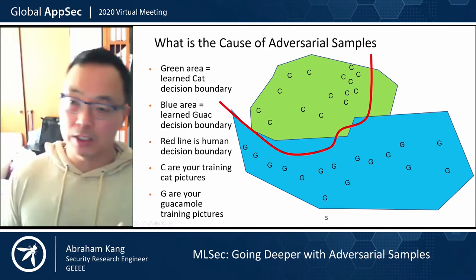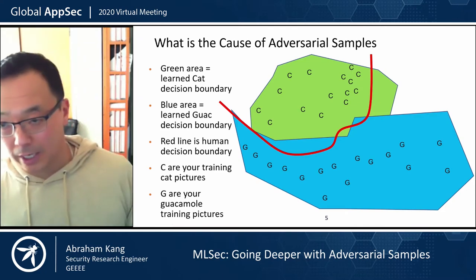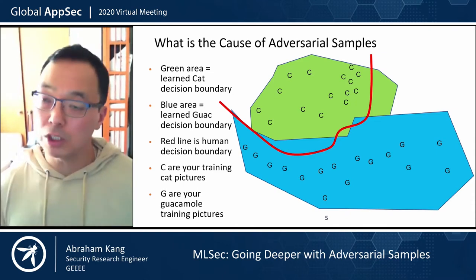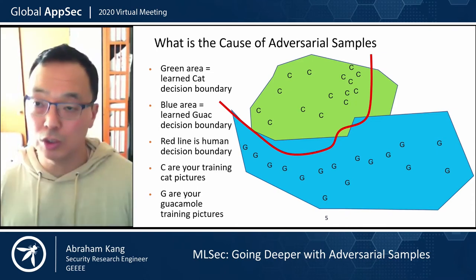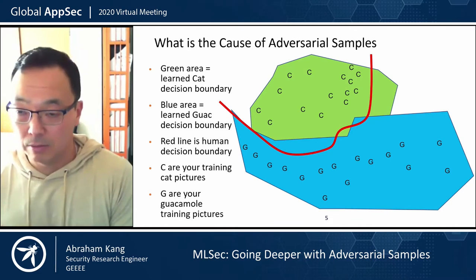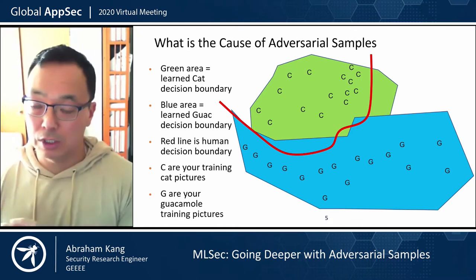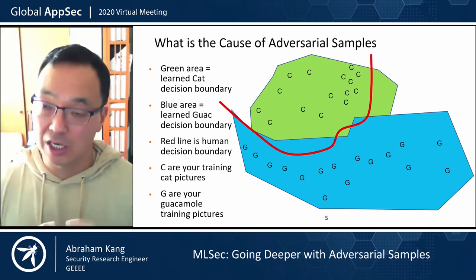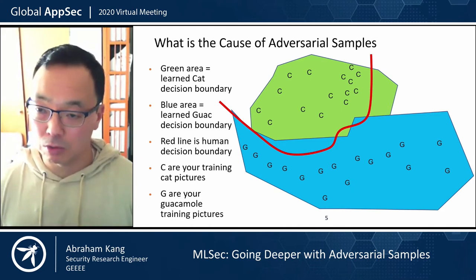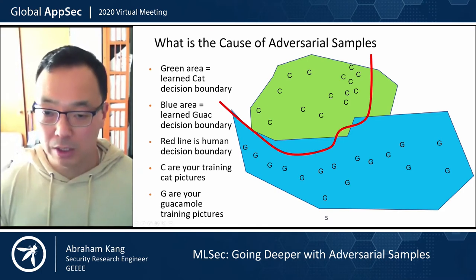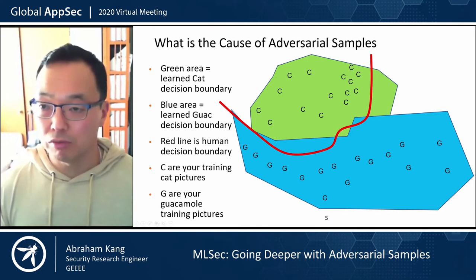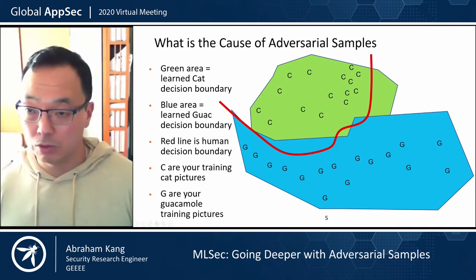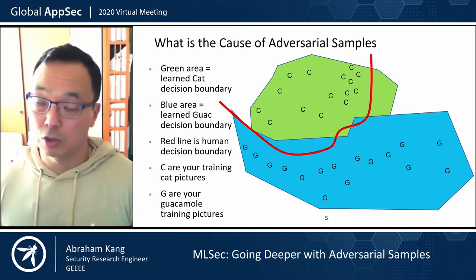Some training images are red cats, black cats, white cats, orange and gray cats. What the machine learning model tries to do is group all these cats together in high-dimensional space and create boundaries between different classes. Here we're looking at the boundary between 'cat' and 'guacamole'.